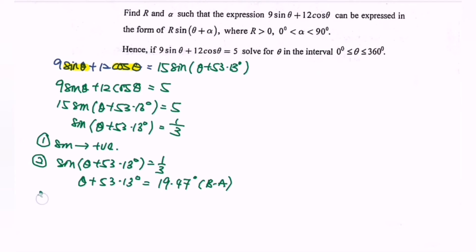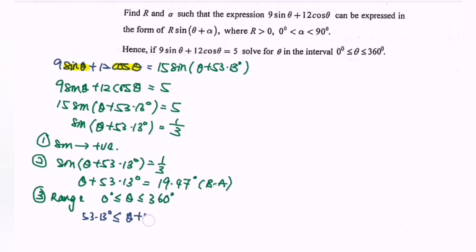Step 3 is to find the range. The original range is 0° to 360°, but since the argument is (θ + 53.13°), we must add 53.13° to both ends of the range, giving: 53.13° ≤ (θ + 53.13°) ≤ 413.13°.